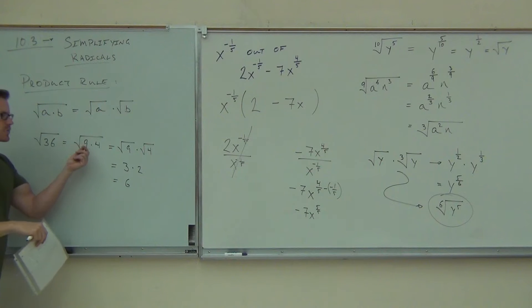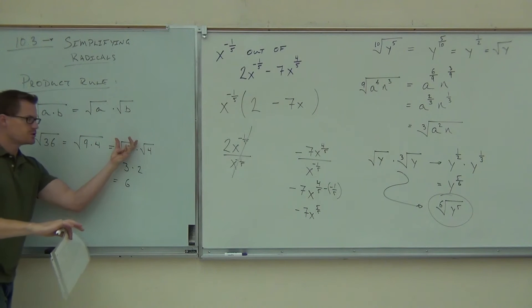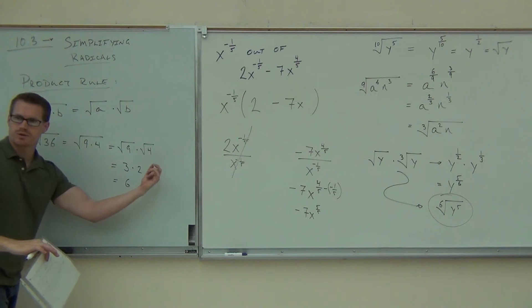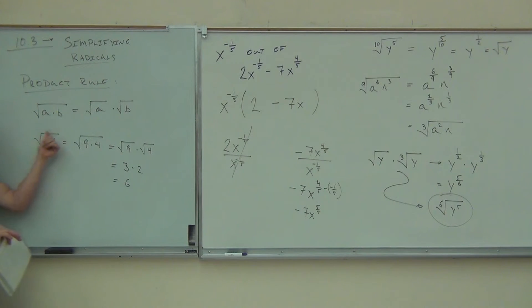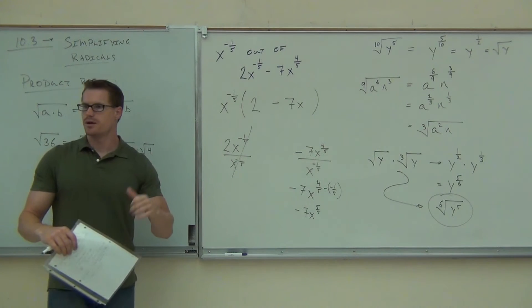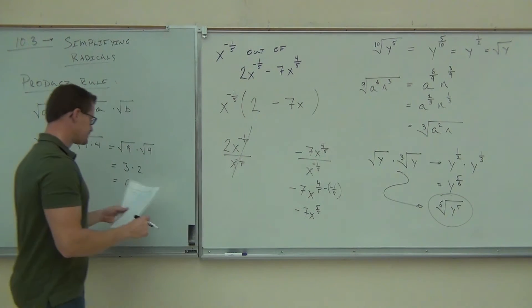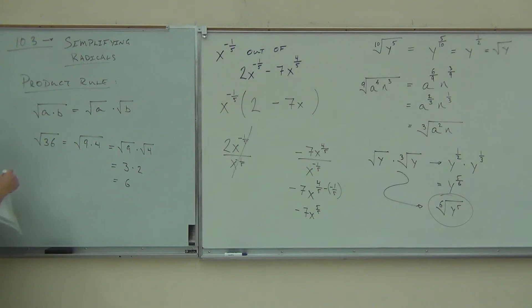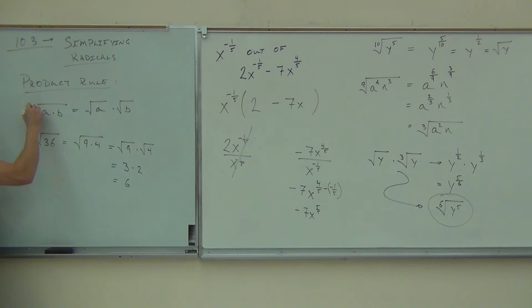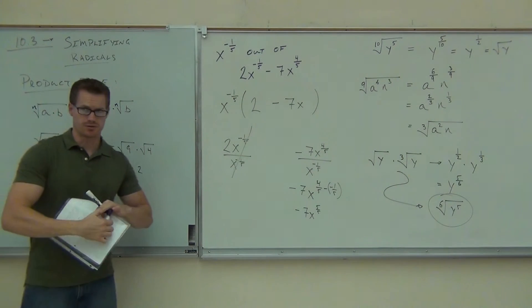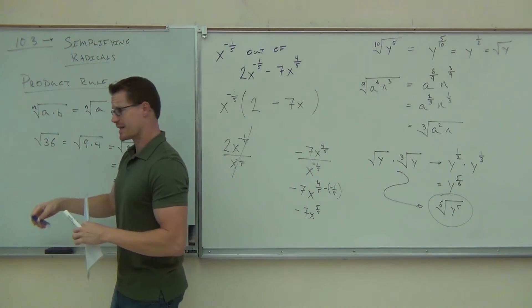So if we can break up some number or some quantity as a product, I can split that radical up, do each of the radicals individually, and multiply the results, or those products, and that will give me the same answers if I would have done it normally. Are you following this? Now, not only does this work for square roots, this works for any type of root.